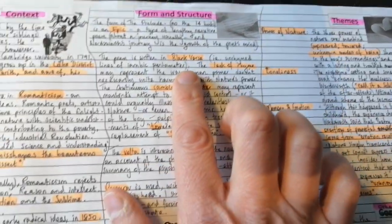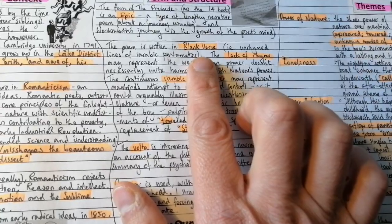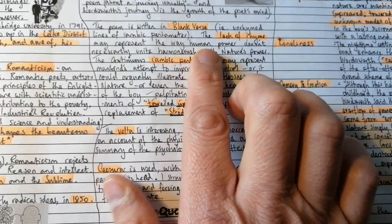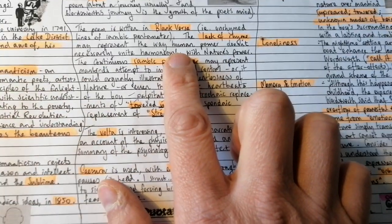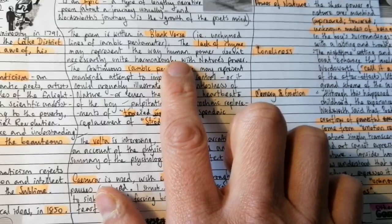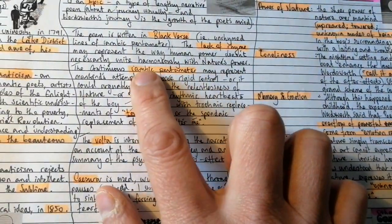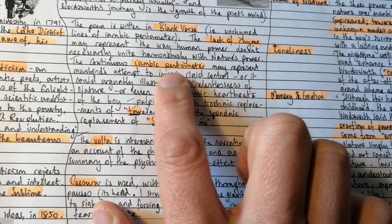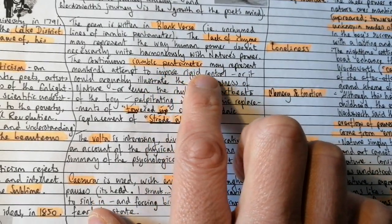So the form is an epic and it's written in blank verse, that is unrhymed lines of iambic pentameter. The lack of rhyme might represent, it could represent lots of things, actually, but here are some things that you could say.